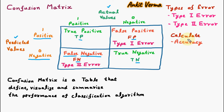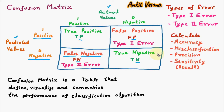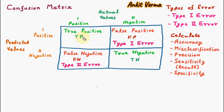With the help of confusion matrix we can calculate: accuracy, misclassification, precision, sensitivity — also called recall — and specificity. Now we are taking one example to calculate all these metrics using the confusion matrix. Let us suppose that TP is given as 45, FP is 55, FN is 5, and TN is 395.